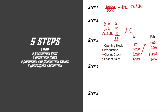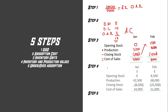Step four is to calculate the inventory and production values. All you need to do is take step two times step three — that is, the absorption cost multiplied by the inventory units. For example, £17 times 2,500 units gives you £42,500.